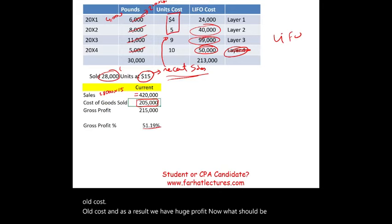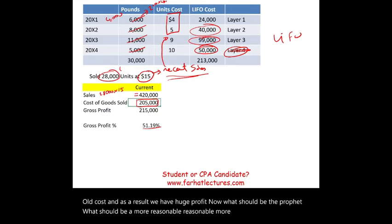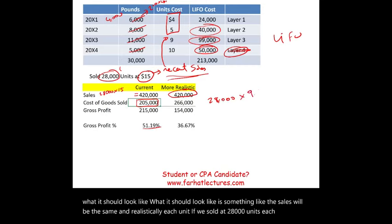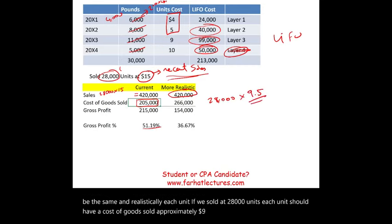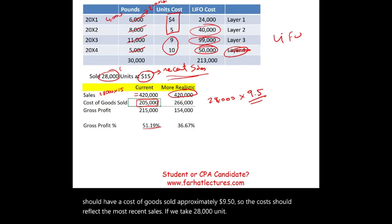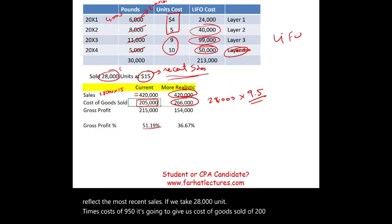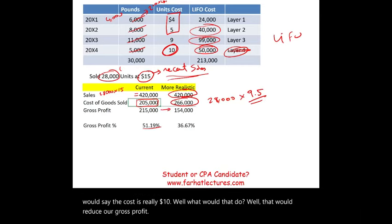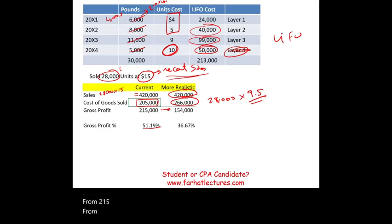What should a more reasonable picture look like? Sales remain the same, but realistically each unit's cost of goods sold should be approximately $9.50, reflecting the most recent costs. If we take 28,000 units times $9.50, that gives a cost of goods sold of $266,000. Or if you assume cost is $10, that would reduce gross profit from $215,000 to $154,000 — a reduction of $61,000 — and the gross profit percentage becomes 36.67%.